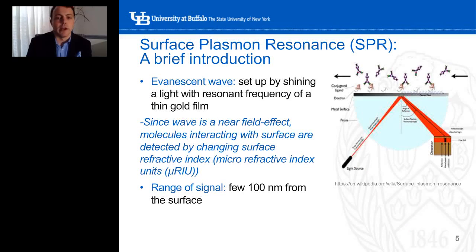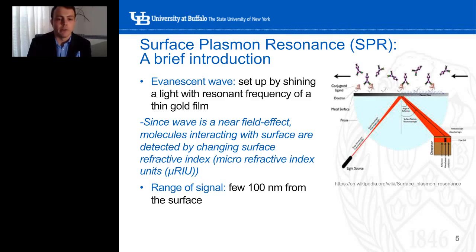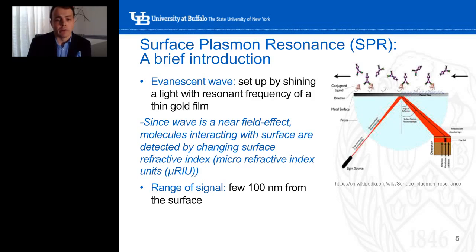Therefore, we wanted to determine whether SPR could be used to probe both kinds of interactions using vascular biology systems. So first we have to answer: what is surface plasmon resonance? An evanescent wave is set up by shining light with the resonant frequency of the surface plasmon of a thin gold film. Since this wave is a near-field effect traveling parallel to the surface rather than perpendicular to it, molecules in the close vicinity of the surface or actually adsorbed on the surface will change the local refractive index, and this changing signal can be measured by the SPR instrument. The range of the signal to sense changing refractive index is a few hundred nanometers from the surface of the chip.